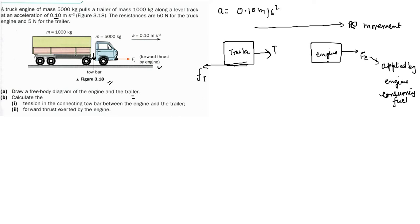Suppose the engine pushes forward with 100 N, but it is not going to move with the full 100 N because other forces like friction and tension also act on it. The friction acts opposite to the direction of movement, and the tension acts between the trailer and the engine in the backward direction.